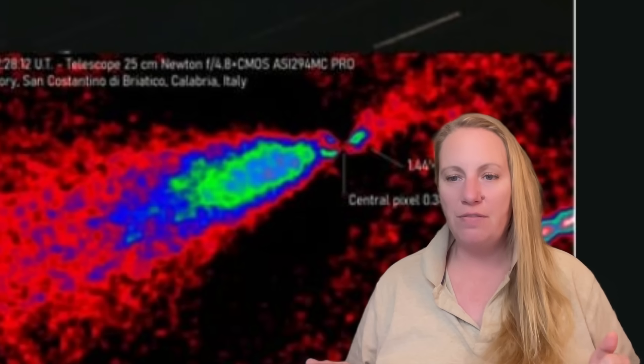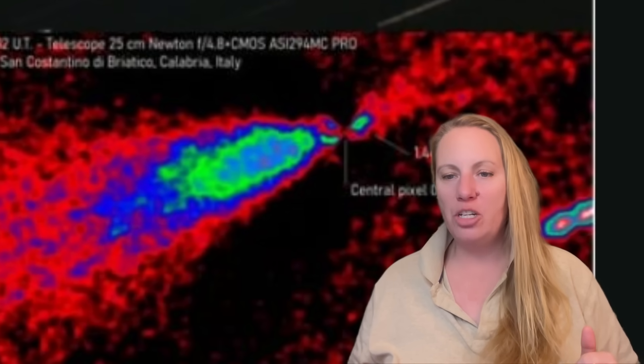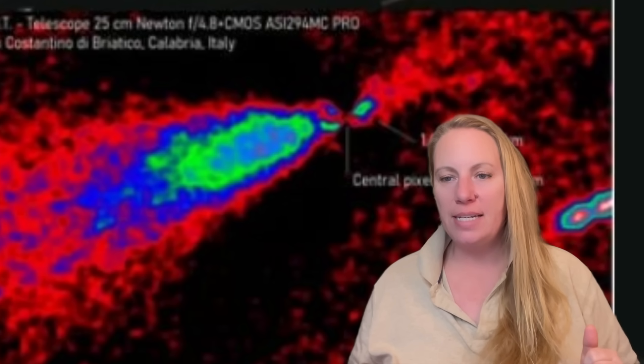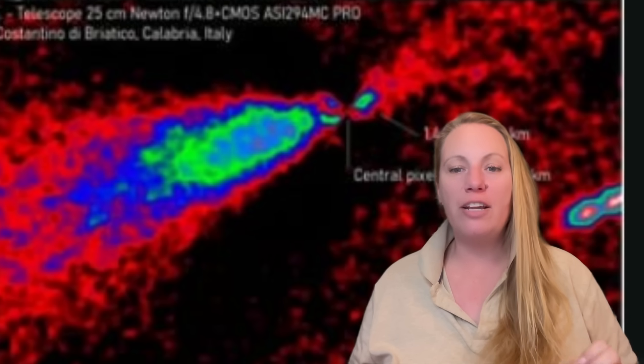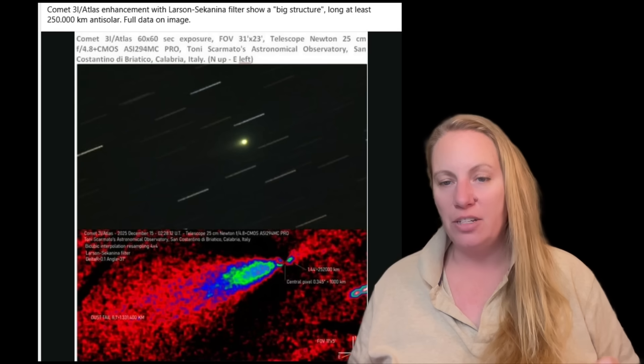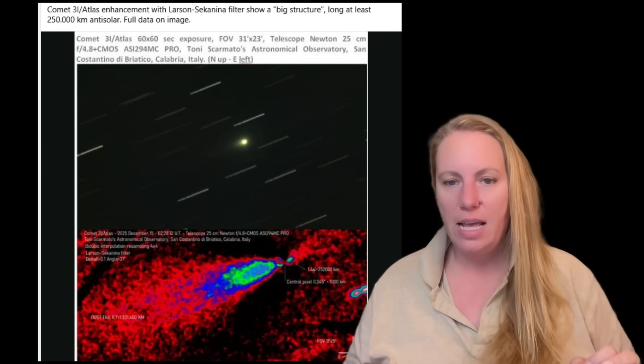This has been taken December 15th, and when we look at the red part of that image, that includes the brightness map, a Larsen Sekanina rotational gradient filter on a fraction of the entire field of view, so that we are able to see the anti-tail in a sunward direction towards the lower left.